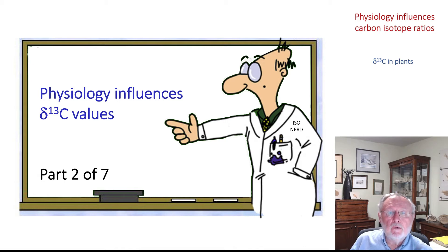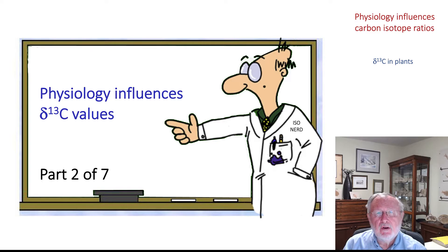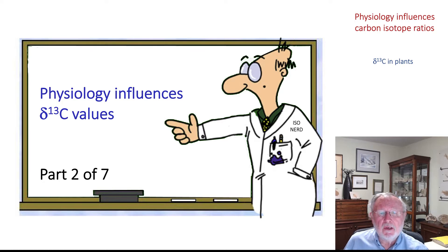Here in part two, we'll talk about what causes variations in the carbon isotope ratio of plants. While there is some variation associated with substrate changes — that is, the isotope ratio of atmospheric CO2 — most of the variation is associated with physiology and physiological processes that influence the fractionation of carbon coming into plants.